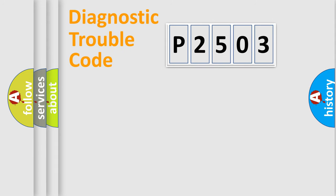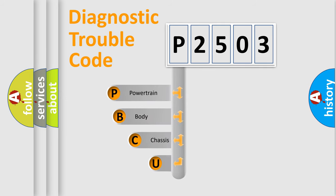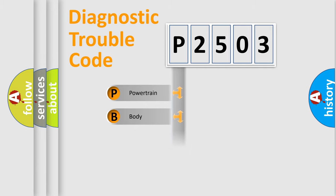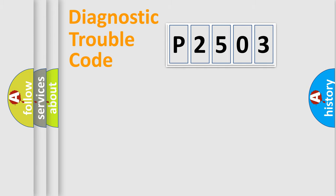Let's look at the history of diagnostic fault code composition according to the OBD-II protocol, which is unified for all automakers since 2000. We divide the electric system of the automobile into four basic units: Powertrain, Body, Chassis, and Network.